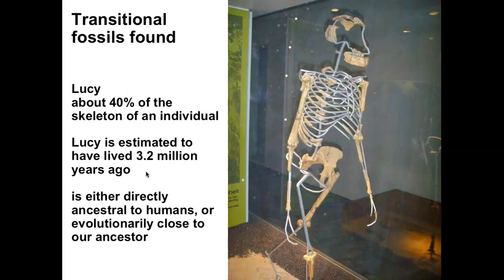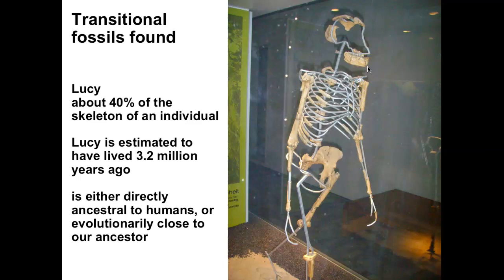There are things called transitional fossils — fossils with intermediate anatomy that looks like both an organism that lived long ago and a present-day organism. Lucy is one of the most famous transitional fossils. She is thought to be a transitional fossil between our ancestors and modern humans, and has been carbon dated to 3.2 million years ago.